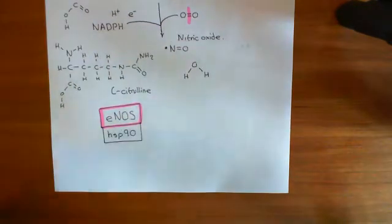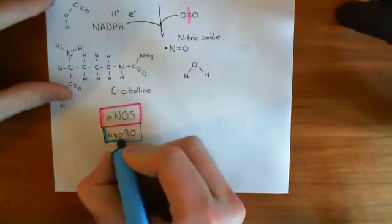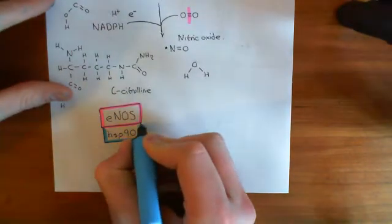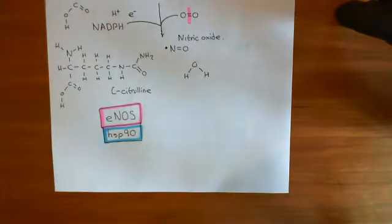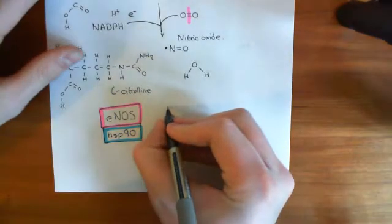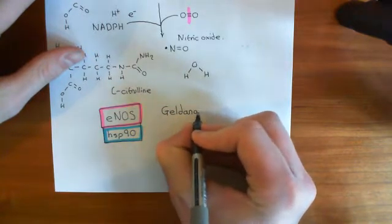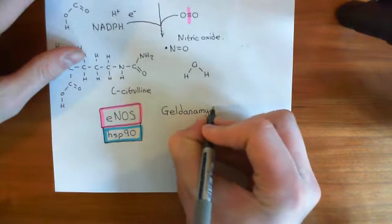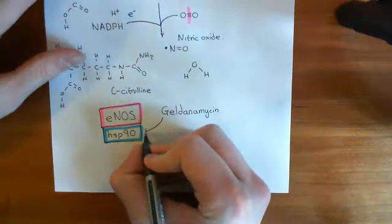So let's highlight this in blue. Now, what's the evidence for heat shock protein 90 being important in E-NOS function? Well, basically, if you use a drug which inhibits heat shock protein 90, the name of which is geldanamycin.